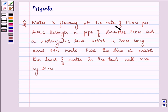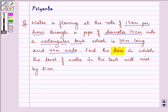It says water is flowing at the rate of 15 km per hour through a pipe of diameter 14 cm into a rectangular tank which is 50 meter long and 44 meter wide. Find the time in which the level of water in the tank will rise by 21 cm.